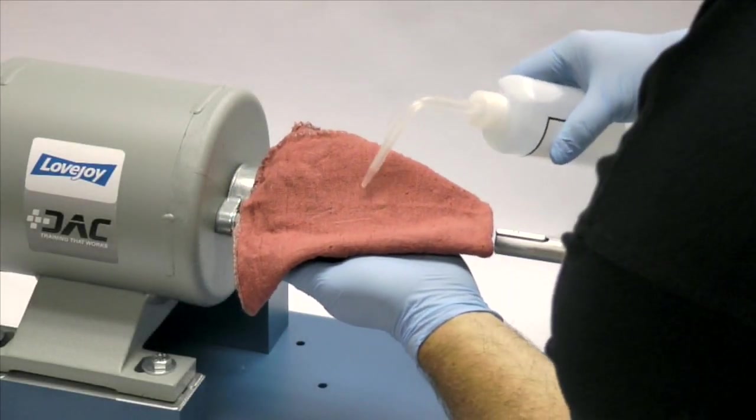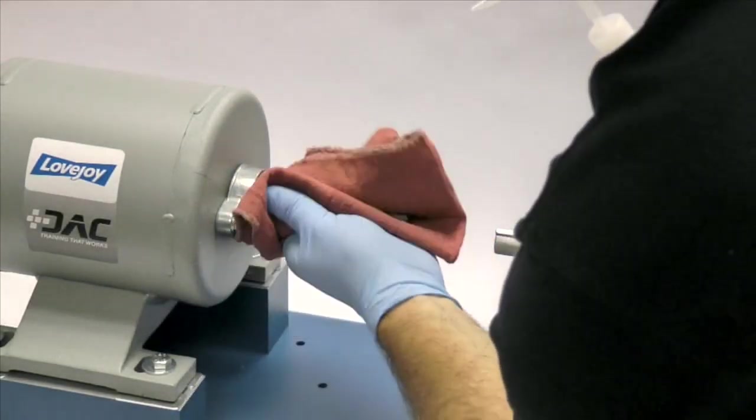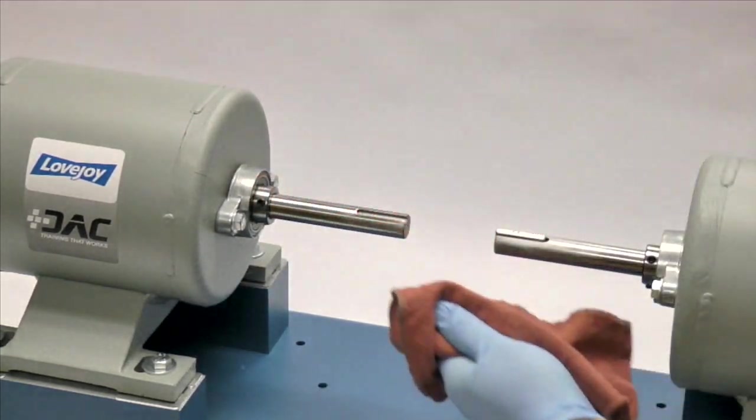The emery paper can be used to clear the shaft of rust or any fretting corrosion. Finally, using our cloth and cleaning solvent, we need to ensure the surface of the shaft and the keyway are clean and free of dirt.